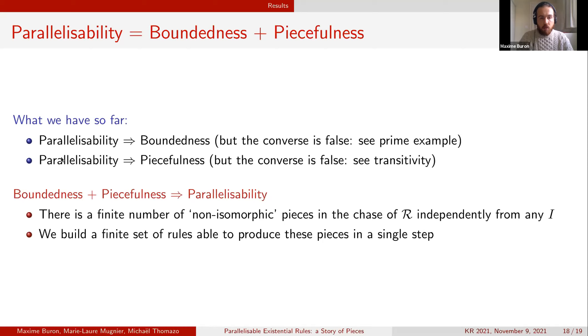We also show that parallelisability implies peacefulness but the converse is false because we can consider for example a single transitive rule which will be peaceful but not bounded, so not parallelisable. In the other way, if we have both boundedness and peacefulness it implies parallelisability.